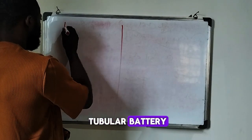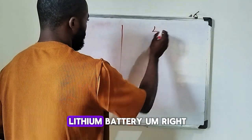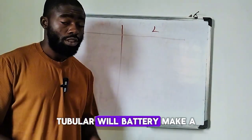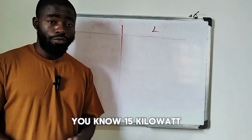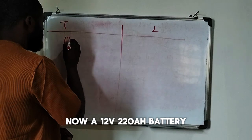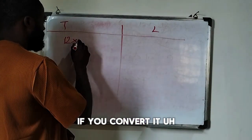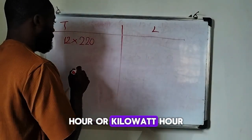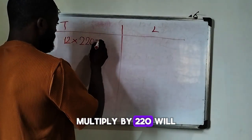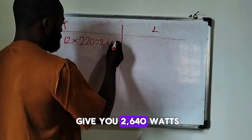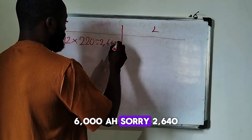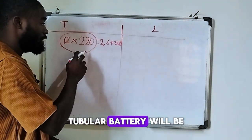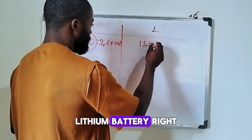Let's divide the board into two — here we have tubular battery, labelled T, and here we have lithium battery. The question is: how many units of 220Ah tubular battery will make a single unit of a 15 kilowatt-hour lithium battery? A 12-volt 220Ah battery, if you convert it to watt-hours, is 12 multiplied by 220, which gives you 2,640 watt-hours.